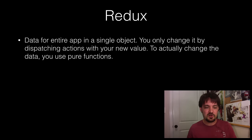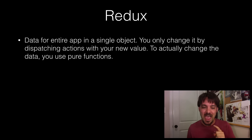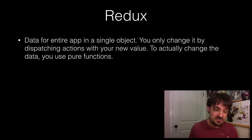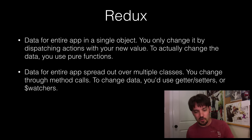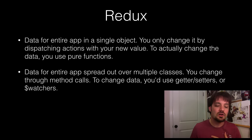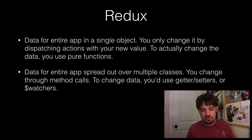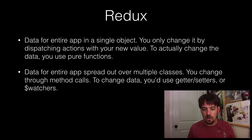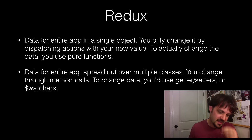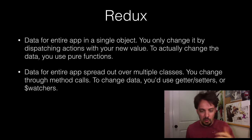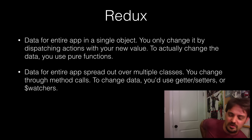Here's how it works. You've got data for your entire application in a single object. You can only change it by dispatching actions with your new value or values. To actually change the data, you use pure functions. This is as opposed to the existing way where data from my entire app is spread out over multiple classes and files in JavaScript. You change them through method calls, getters and setters, watchers, or root scope broadcast.